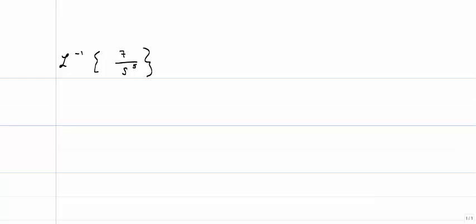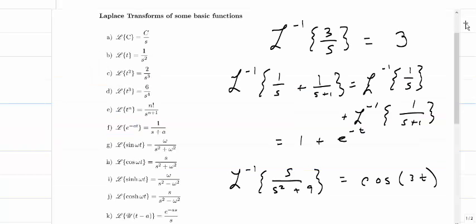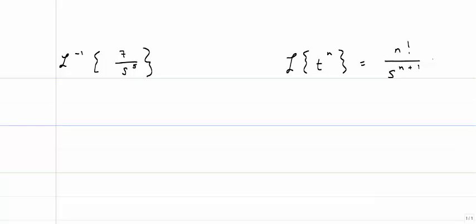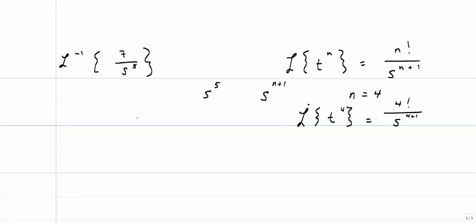Let's look at 7 over s to the 5th. There's no direct table entry for this, so I'll use the entry for t to the n: the Laplace transform of t^n equals n factorial over s to the n+1. Comparing s^5 to s^(n+1), I see n must equal 4. So I need 4 factorial over s to the 5th on the right-hand side.